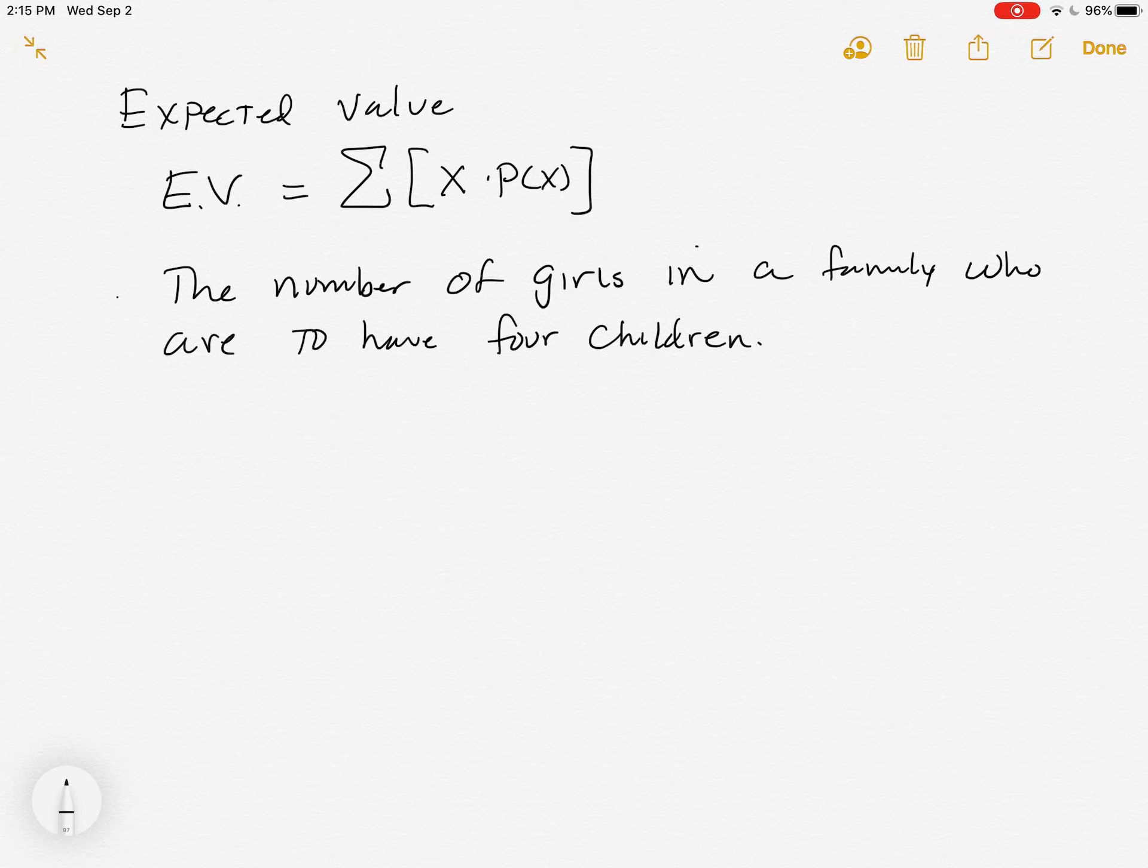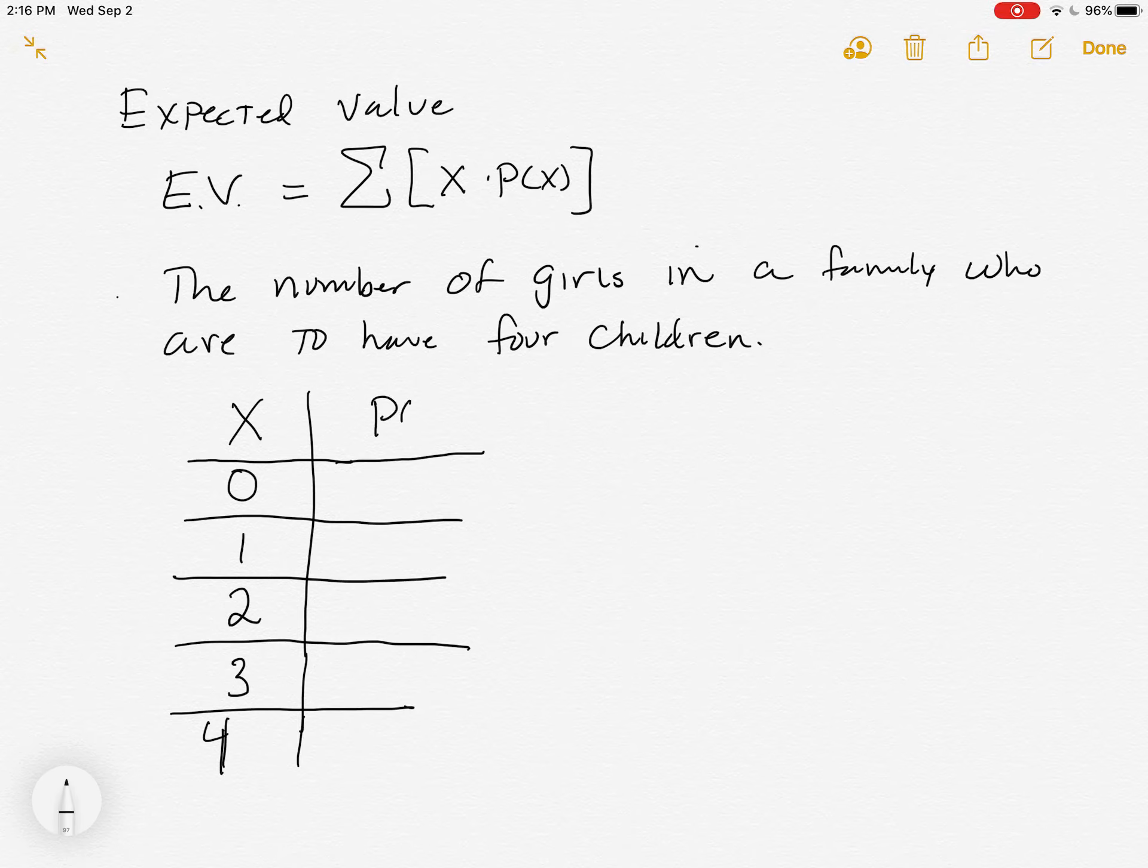So as we go and do an expected value problem, you want to list out the outcomes that are possible. When a couple has four children, there's a possibility that none of them are girls. That is an outcome, right? Or that they have one girl and only one girl, so the other three are boys. They could have two girls and two boys. They could have three girls and one boy. Or they could have all four being girls and no boys. And then we would want to look at the associated probability.